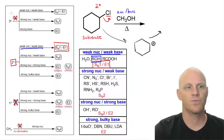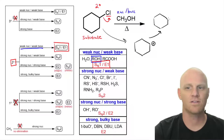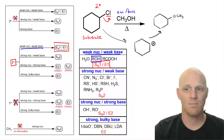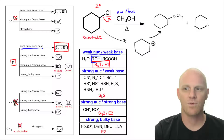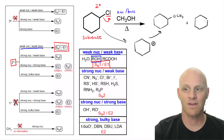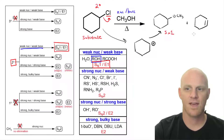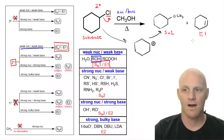Drawing out our products — starting with the substitution product. In this case, we're not forming a chiral center, so we don't have to worry about stereochemistry. Methanol attacks the carbocation and gets deprotonated right after, so it's just the OCH3 that ends up there. Our E1 product forms an alkene — whether I form it adjacent on either side of the carbocation, it's the same either way. So we've got our SN1 product, which is achiral, and our E1 product.